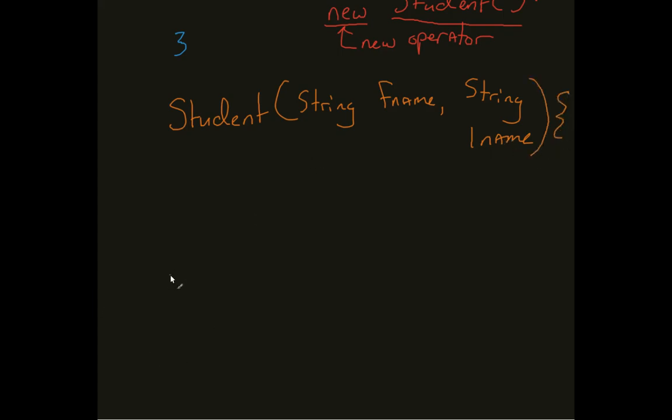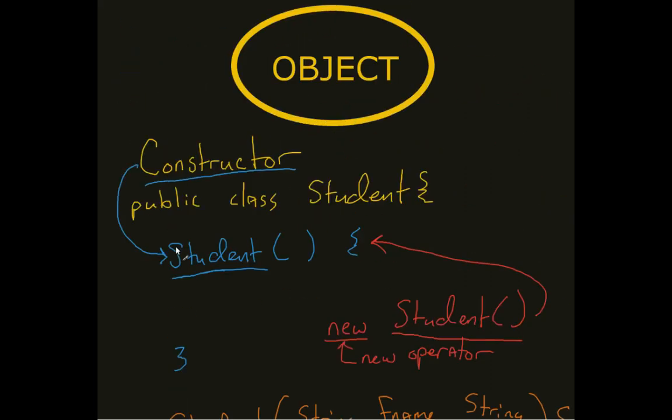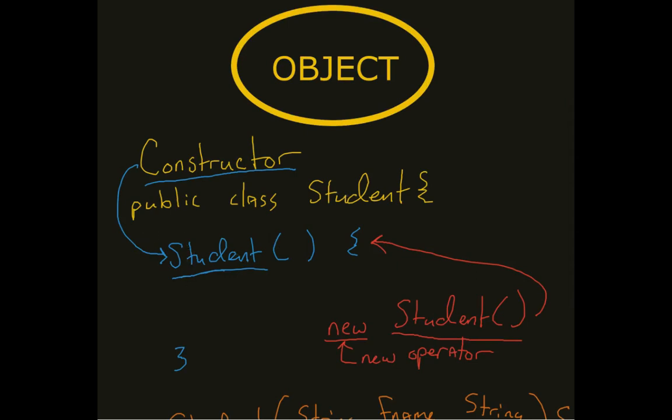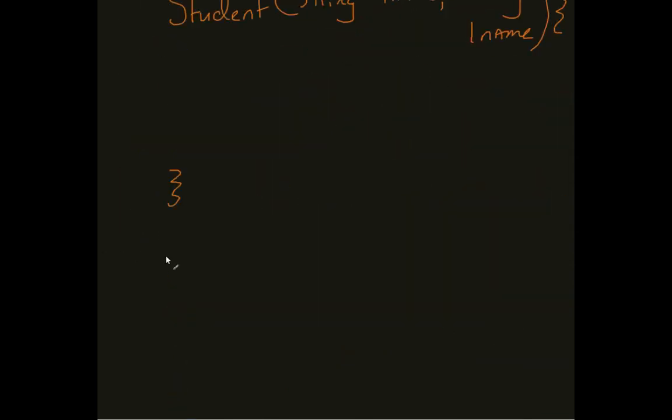Well, one of the things that we had mentioned earlier was this idea that a class has things known as identity, states, and behaviors. Well, one of those things that we can do is we can create what are known as class variables. And let me put this in comments, class variables.